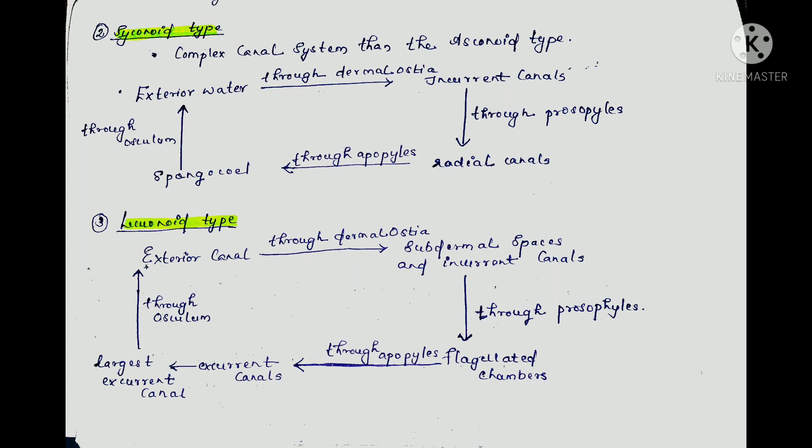The Leucon type has a sterile canal. The dermal ostia lead into sub-dermal spaces, which connect to incurrent canals and then to flagellated chambers and excurrent canals before exiting through the osculum.